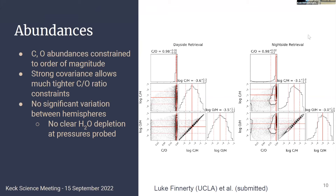What this means is that we can place a very robust constraint on the C-to-O ratio, which is about 1. Interestingly, we don't see a statistically significant variation in the water abundance between day side and night side, even though there's been a previous detection in H-band data of OH on the day side, which we think comes from dissociation. So either that dissociation is very confined longitudinally, or we are looking deeper in the atmosphere below that dissociation layer.